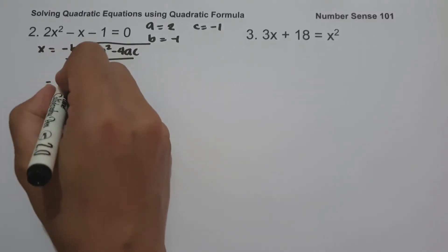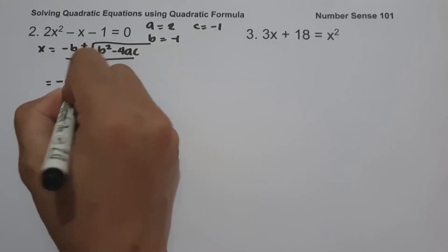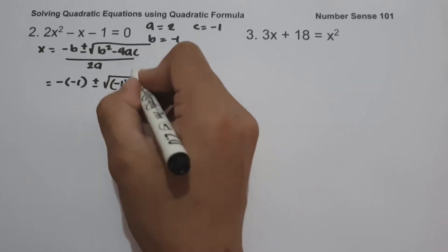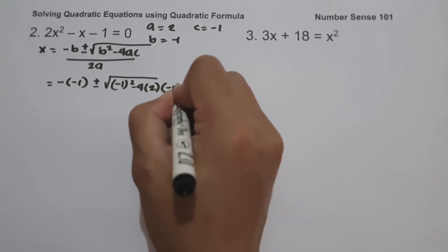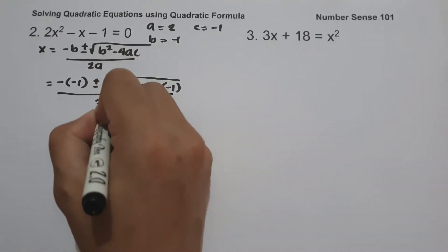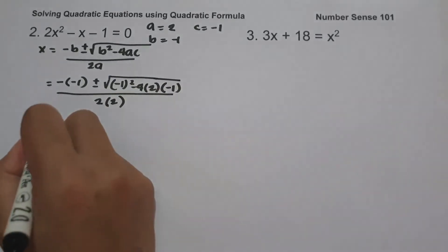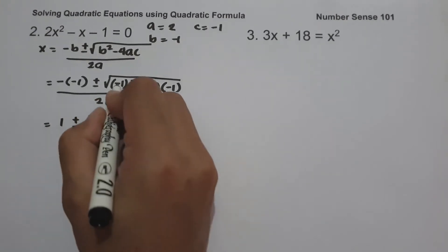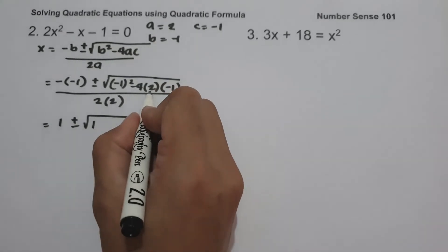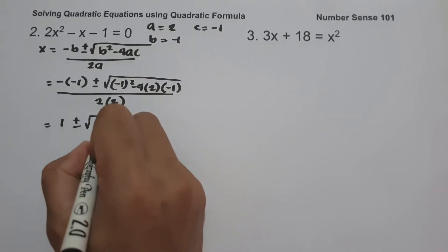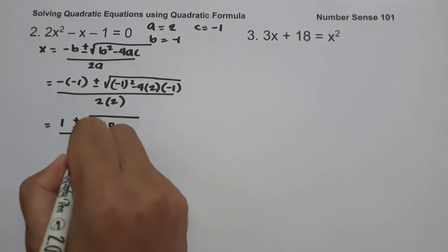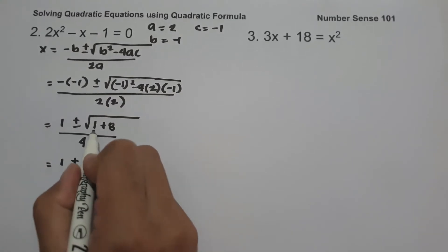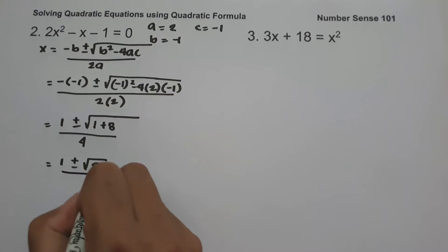So we have negative b, that is negative 1, plus or minus negative 1 squared minus 4 times a, that is 2, times c, that is negative 1, all over 2 times a, that is 2. Negative times negative 1 is positive 1, plus or minus: negative 1 squared is 1; negative 4 times 2 is negative 8; and negative 8 times negative 1 is positive 8; all over 2 times 2, which is 4. So we have 1 plus or minus the square root of 1 plus 8, that is 9, over 4.